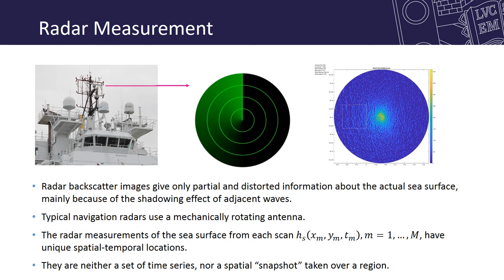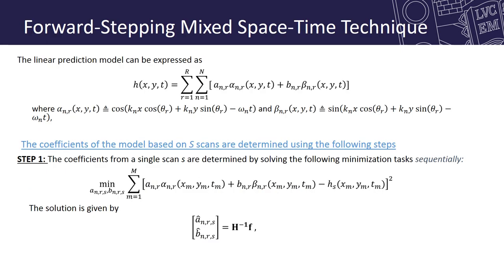The challenge comes from the measurements. Radar backscatter images give only partial and distorted information about the actual sea surface, mainly because of the shadowing effect of adjacent waves, and that is why multiple scans must be combined to build a reliable sea model. Typical navigation radars use a mechanically rotating antenna to scan 360 degrees, so the radar measurements of the sea surface have unique spatial-temporal locations — they are neither a set of time series nor a spatial snapshot; in fact, they are helical in time and space.